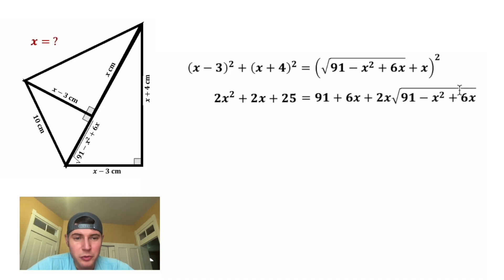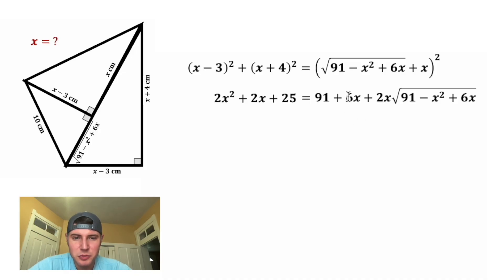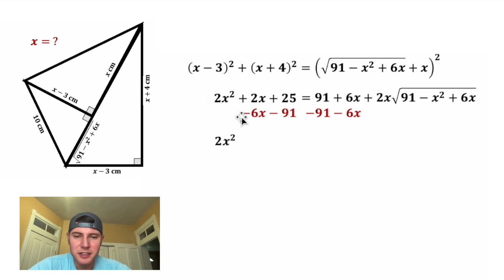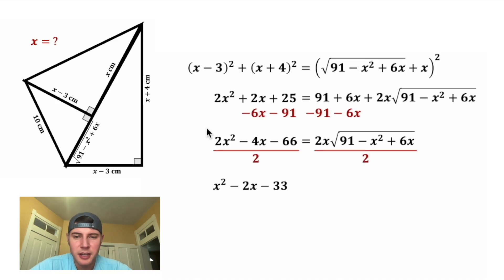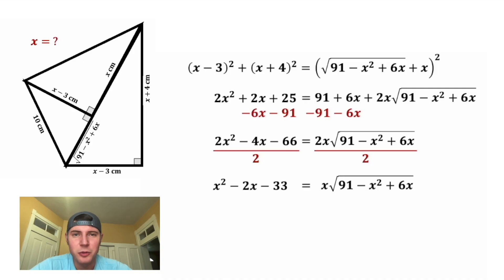Looking at this, we still have a square root on the right-hand side. The only way to get rid of it is to isolate it and then square both sides. So let's subtract 6x and subtract 91 from both sides. Bringing down 2x squared, 2x minus 6x is negative 4x, and 25 minus 91 is negative 66. On the right-hand side we just have 2x times the square root. Since everything is divisible by 2, we divide both sides by 2, giving us x squared minus 2x minus 33 on the left, and x times the square root on the right.